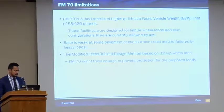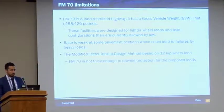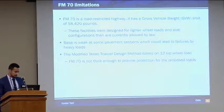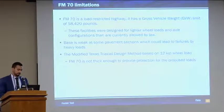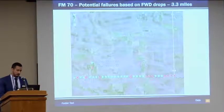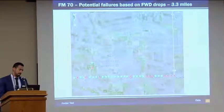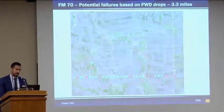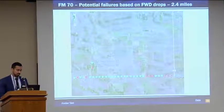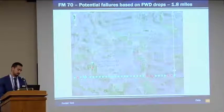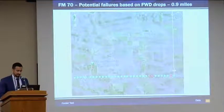So what are our limitations? First of all, FM 70 is a load-restricted highway, and these facilities are designed for wheel loads that are lighter than those currently allowed by law. The base is weak at some spots, which could lead to failures under those heavy loads, and it's not thick enough — the TxAxle check is asking for an extra couple of inches. We mapped those weak spots based on flex base modulus. We have 3.3 miles with a flex base modulus less than 40 KSI, represented by red dots. 2.4 miles has a modulus less than 30, 1.8 miles has a modulus less than 20, and the bottom mile has a modulus of less than 15, which is pretty much subgrade.